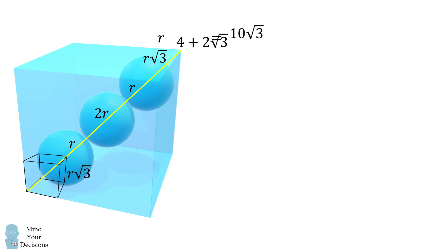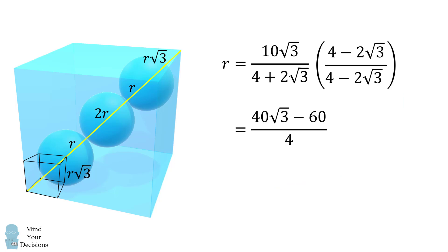We can thus solve for r. And to simplify things, we'll multiply by the conjugate. We thus get that r is equal to the following, which simplifies to be 10 times the square root of 3 minus 15. And that's approximately equal to 2.32.